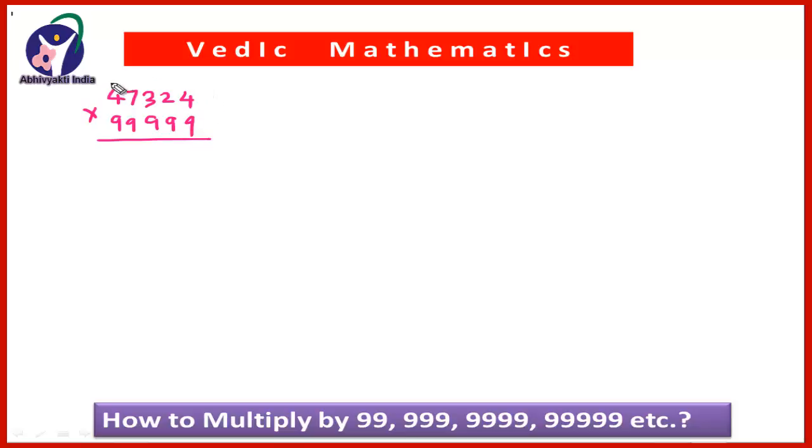So first, just take out one from this 47,324. So it will be 47,324 minus 1. This you can do orally. You need not write this. But for the sake of explanation, I am writing it.